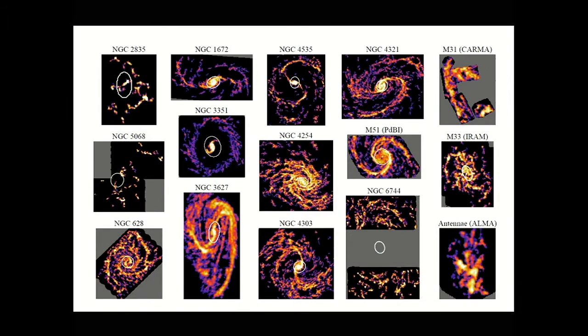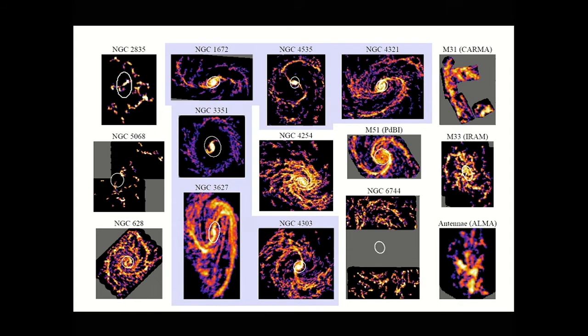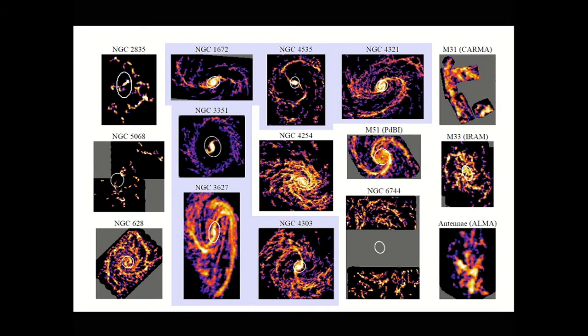These measurements show that molecular gas properties vary significantly both within each galaxy and across our whole sample. We see enhanced surface density and velocity dispersion in the central 1 kiloparsec region of many strongly barred galaxies. This is consistent with previous low-resolution observations in similar galaxies, and it supports the idea that stellar bar drives gas inward to the central region.